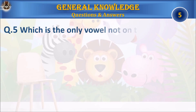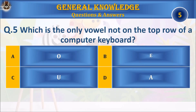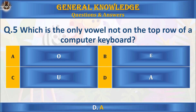Question 5: Which is the only vowel not on the top row of the computer keyboard? A) O, B) E, C) U, or D) A. Your time starts now. The answer is D) A.